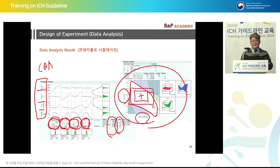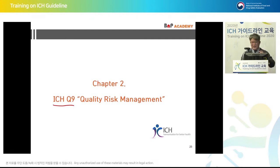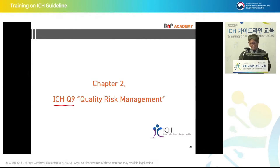NOR and proven acceptable range can be calculated in a representative and reproducible way. Next, Q9. For Q9, it's not just about QBD, but also the selection of equipment, the reduction or prevention of contamination activities, and how to reduce failure in manufacturing. Those are the areas where Q9 can be utilized.